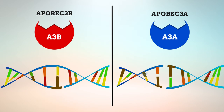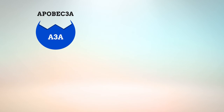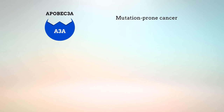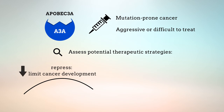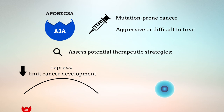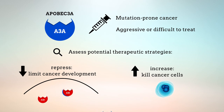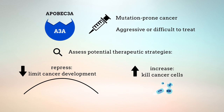These findings have important clinical implications for diagnosis and prognosis. Either signature could indicate a risk of cancer, and the A3A signature in particular would indicate a more mutation-prone cancer, which could be more aggressive or difficult to treat. Future research should assess potential therapeutic strategies that either repress A3A and A3B, or counter-intuitively actually increase their activity in cancer cells in order to cause levels of DNA damage and mutation that are lethal to the cancer cells.